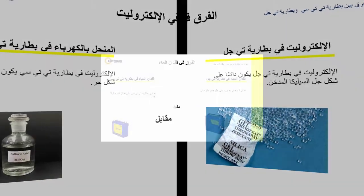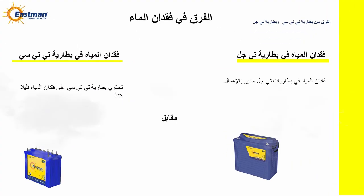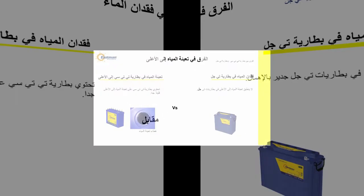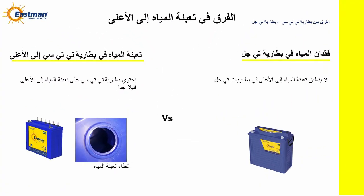Difference in Water Loss. TTC battery has very less water loss. Water loss in the case of T-Gel battery is negligible. Difference in Water Top Up. TTC battery has a very small amount of water top up. Water top up is not applicable in the case of a T-Gel battery.